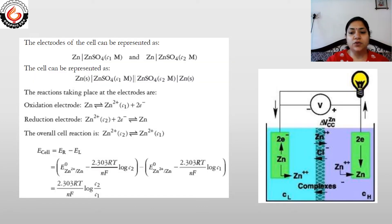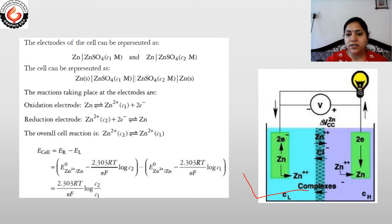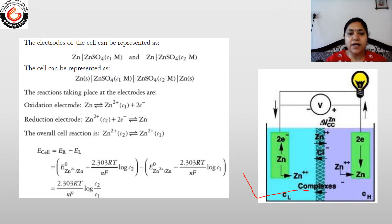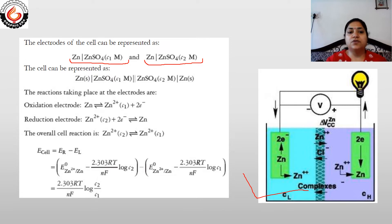An example of an electrolyte concentration cell is given using zinc in zinc sulfate solution. As shown in the diagram on the right side, the cell has two compartments. In both compartments, the electrodes are zinc and the solution of zinc sulfate is filled — so zinc is dipped into the zinc sulfate solution. The only difference is the concentration of the two zinc sulfate solutions: one is higher and the other is lower in concentration. The first half cell electrode is represented as Zn | ZnSO₄ (C1) and the second as Zn | ZnSO₄ (C2). The complete cell is represented by putting a salt bridge between the two half cells.